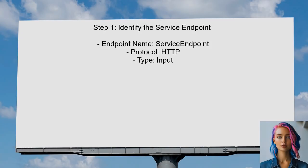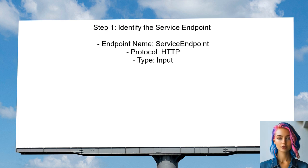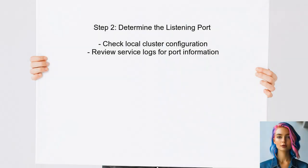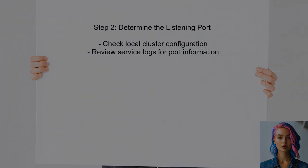To find the correct endpoint for triggering the get accounts method, the user should first identify the service endpoint defined in the service manifest. In this case, the endpoint is named Service Endpoint. Next, the user needs to determine the port number that the service endpoint is listening on.